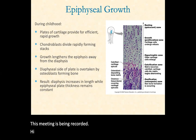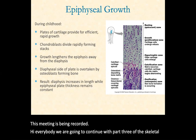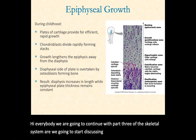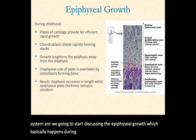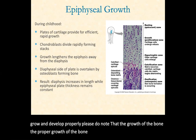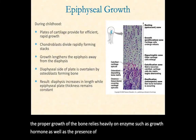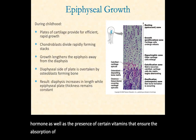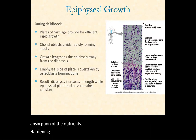Hi everybody. We are going to continue with part three of the skeletal system. We're going to start discussing the epiphyseal growth, which basically happens during childhood, allowing the child's bones to grow and develop properly. Please note that the proper growth of the bone relies heavily on hormones such as growth hormone, as well as the presence of certain vitamins that ensure the absorption of nutrients and hardening of bone tissue. So let's go ahead and get started with the epiphyseal plate.